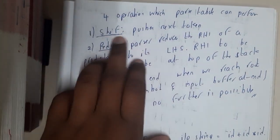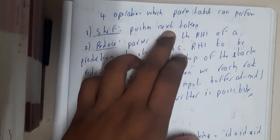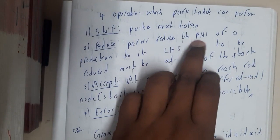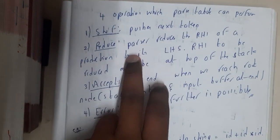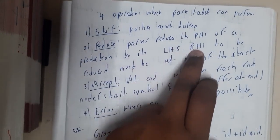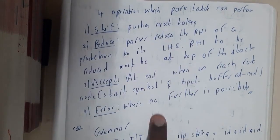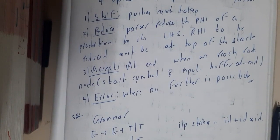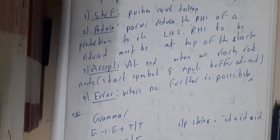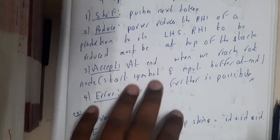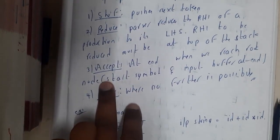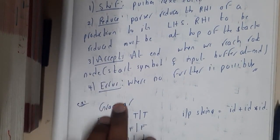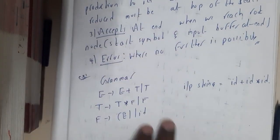There are four operations. Shift: pushes the next token onto the stack. Reduce: the parser reduces the RHS of a production to its LHS; the RHS to be reduced must be at the top of the stack. Accept: when the buffer is empty and the stack points to dollar. Error: when there is no future possibility.